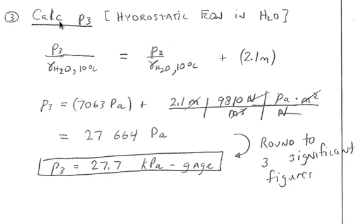Lastly, we calculate the pressure at 3. The work is shown here. The answer is given right here. Notice that it's specified as kilopascals gauge. Notice also that we round to three significant digits.